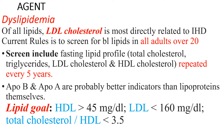Regarding lipidemia, of all lipids, LDL cholesterol is most directly related to ischemic heart disease. Current rules recommend screening for blood lipids in all adults over 20. The screen includes a fasting lipid profile — total cholesterol, triglycerides, LDL cholesterol, and HDL cholesterol — repeated every 5 years. ApoB and ApoA are probably better indicators than lipoproteins themselves.